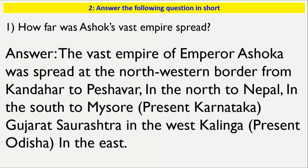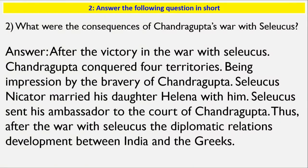Question: How far was Ashoka's vast empire spread? The vast empire of Emperor Ashoka was spread from the north-western border from Gandhar to Peshawar, in the north to Nepal, in the south to Mysore (present Karnataka), Gujarat and Saurashtra in the west, and Kalinga (present Odisha) in the east.